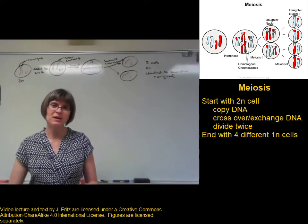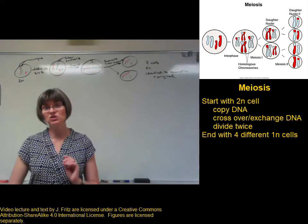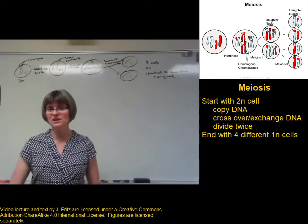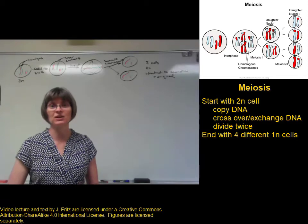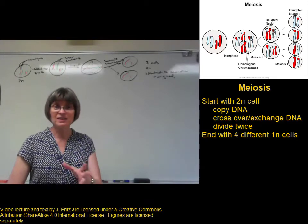Instead of dividing once to make two cells, we're going to end up dividing twice, and we're going to end up with four cells that are different from the original cell.